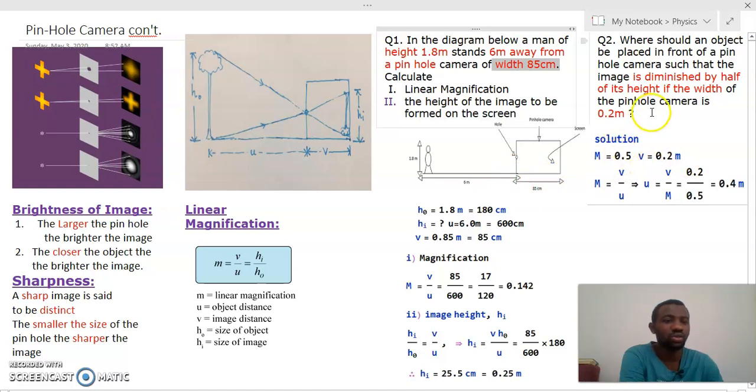So here there is also a coded information. It says that the image is diminished by half of its height, so that means basically we've been given magnification to be half. Magnification is half, and we are told in the question that the width again is 0.2 meters as before.